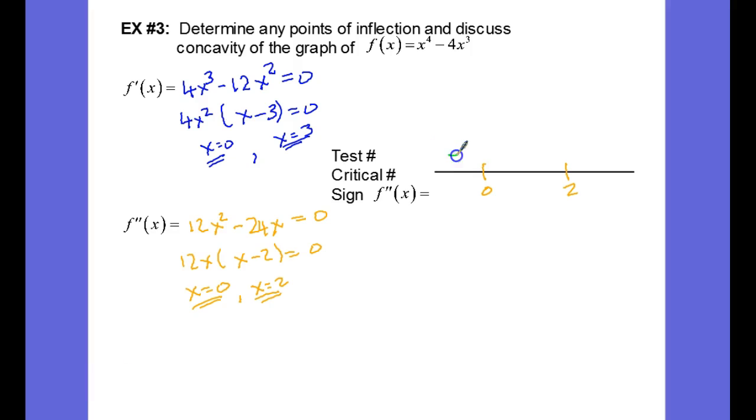So let's pick negative 1, between 0 and 2 is 1, and then greater than 2, we'll pick 3. And we're just going to plug into f double prime, so substituting into f double prime.